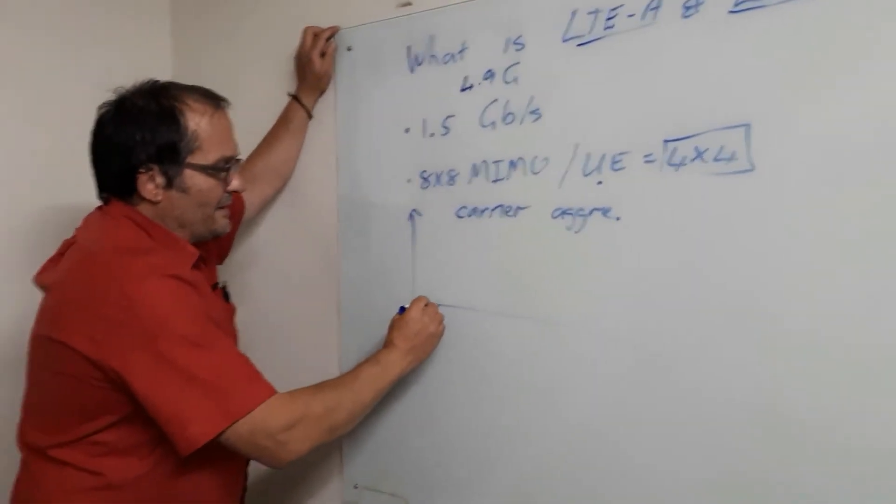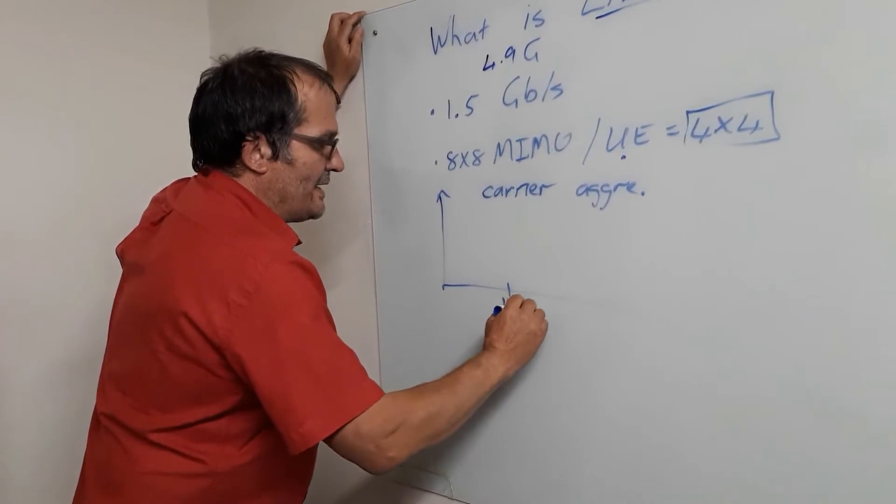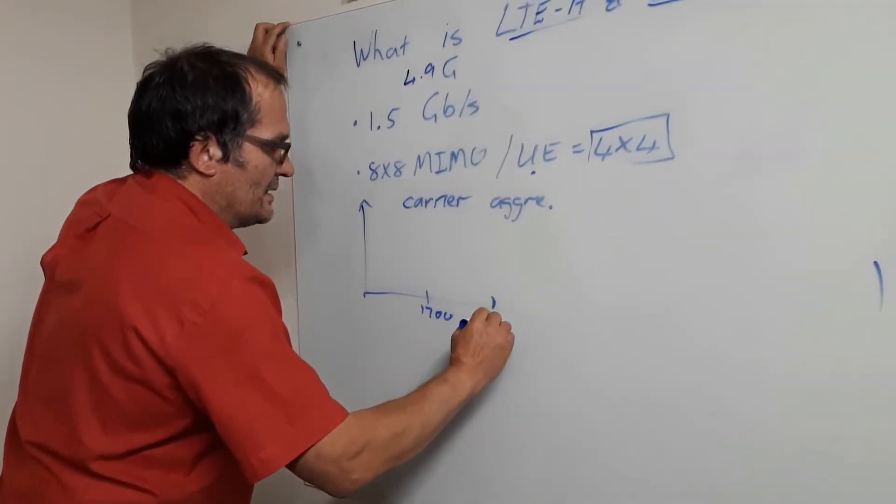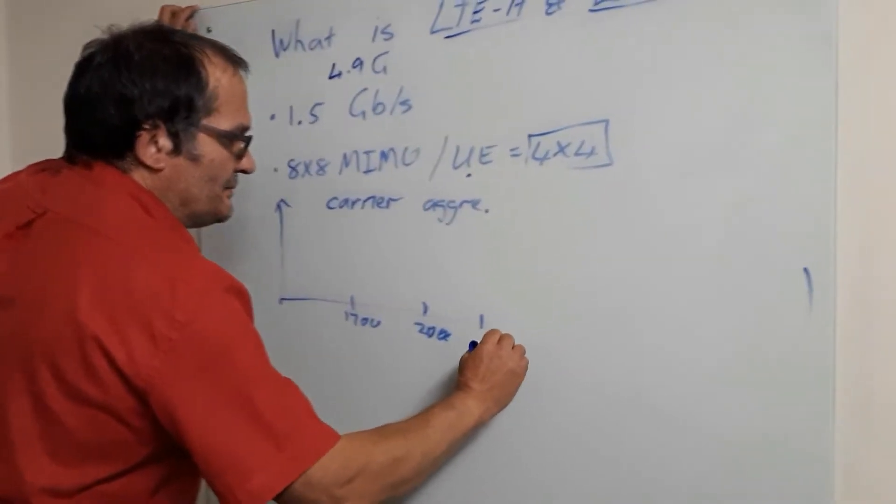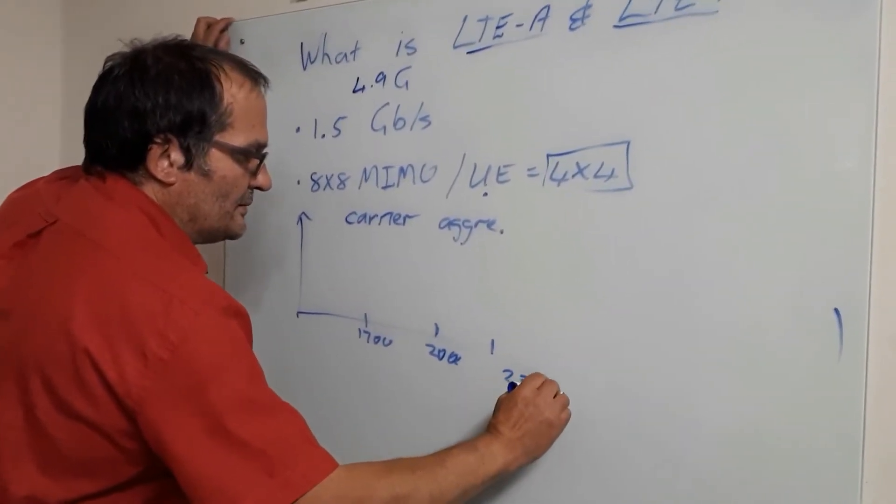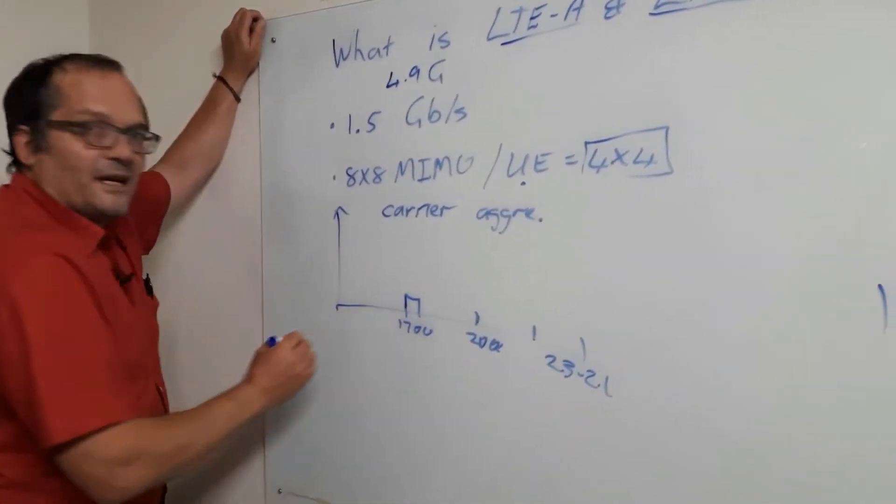So carrier aggregation means that I'm going to illustrate it just in terms of the 1700 band up to about 2 gigs. There's the lower bands that we used to use, and then there's 2.3 up to 2.4. Now many times we started off and an operator would have a chunk of this band.